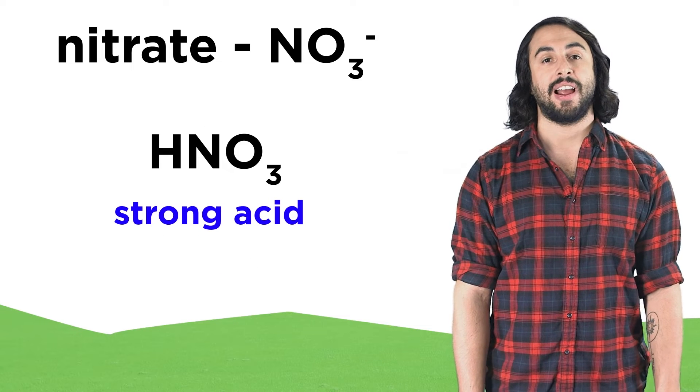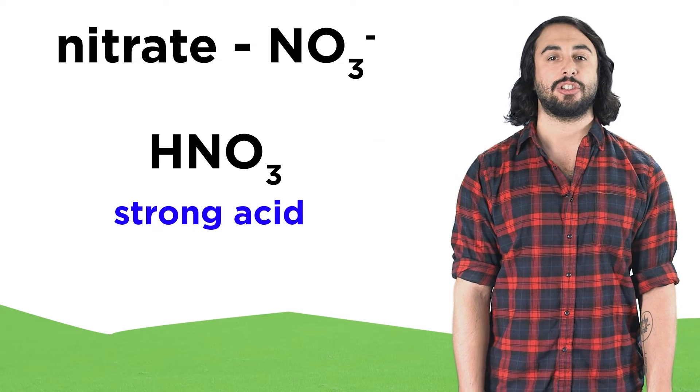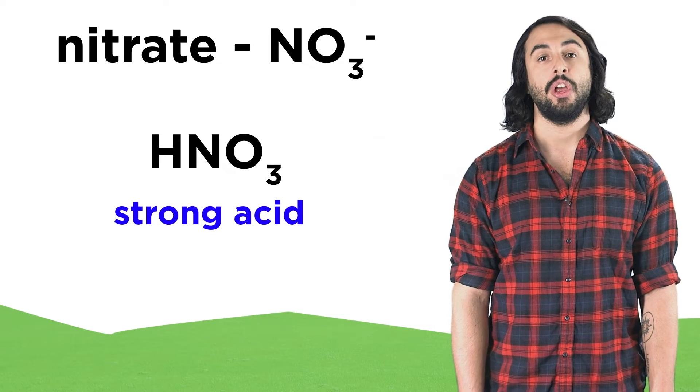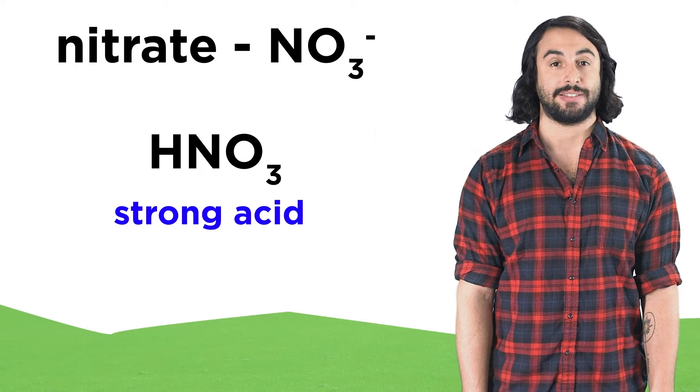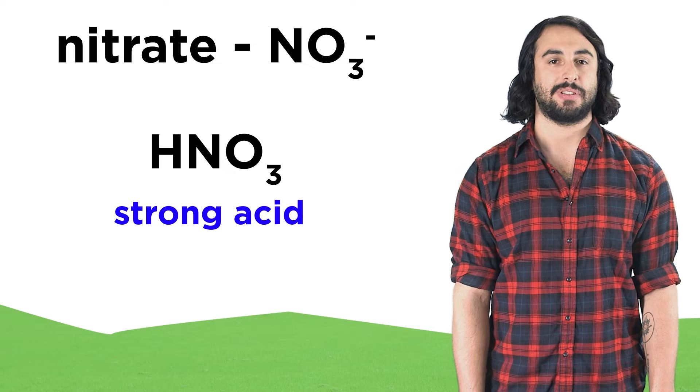The nitrate ion is very stable, so its conjugate acid is indeed rather acidic, since the strength of an acid is proportional to the stability of its conjugate base. To name this acid, we follow a few simple steps.